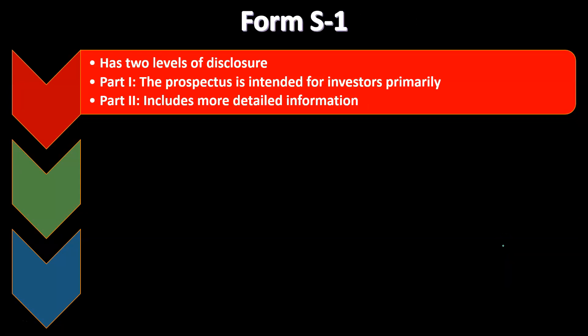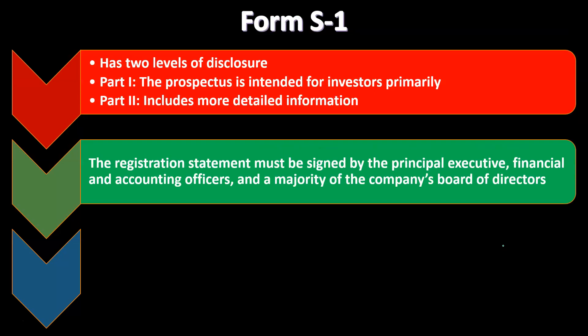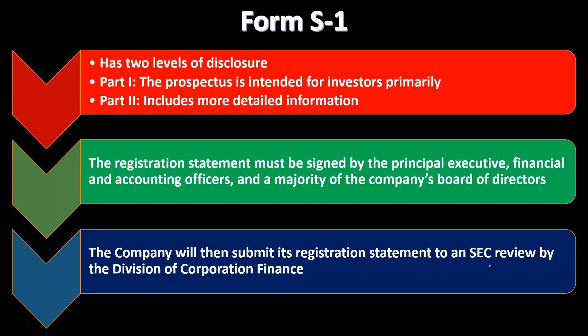Form S1 has two levels of disclosures. Part one, the prospectus, is intended primarily for investors who are going to be investing in the stock. Part two includes more detailed information. The registration statement must be signed by the principal executive, financial, and accounting officers, and a majority of the company's board of directors.